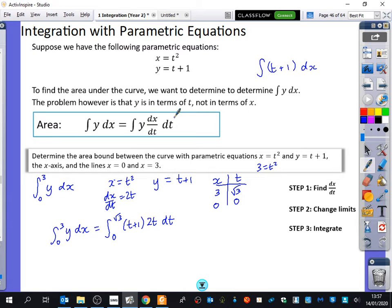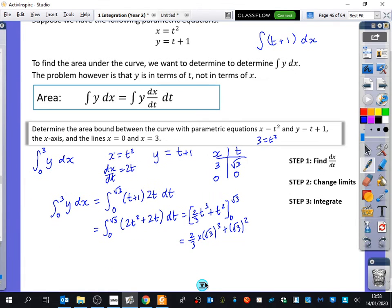And obviously, we'll do the question. We obviously have to finish the question off. So to integrate this, what should I do? Just expand it. Good. So we're going to be integrating 2t squared plus 2t with respect to t. So it's going to be 2 over 3 t cubed plus t squared between 0 and root 3. So it's 2 over 3 times root 3 cubed plus root 3 squared. I'm not going to bother doing the 0 part because the 0 part is obviously just going to be 0. Root 3 cubed is 3 root 3. So it's 3 root 3 divided by 3, which is just root 3. So it's 2 root 3 plus 3. So the area is 2 root 3 plus 3.